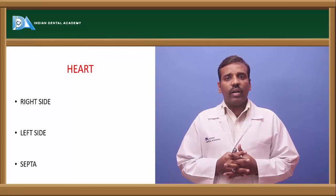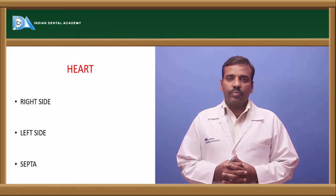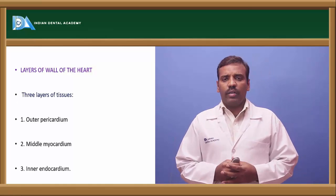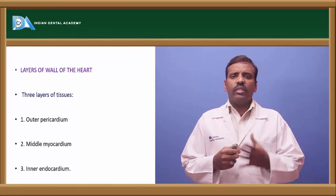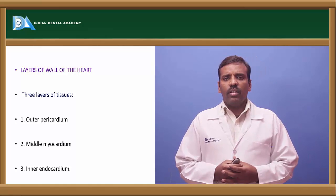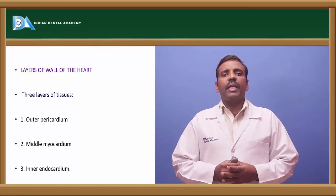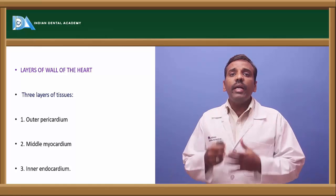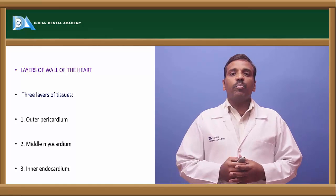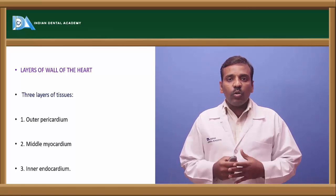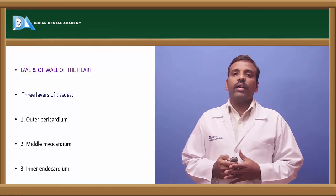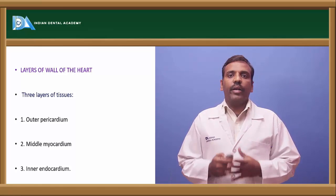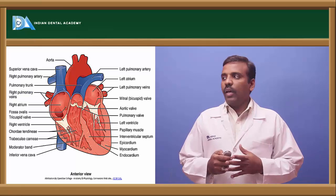The heart contains auricles and ventricles. If you see the parts of the heart, it divides into three parts: the right side of the heart, the left side of the heart, and the center. The layers of the heart — there are three layers: the outer layer is called the pericardium, the middle layer is called the myocardium.